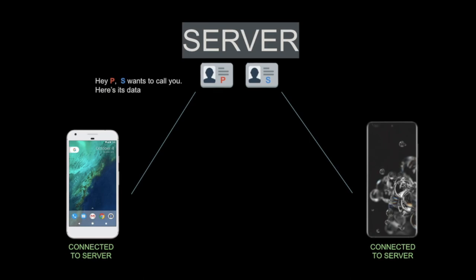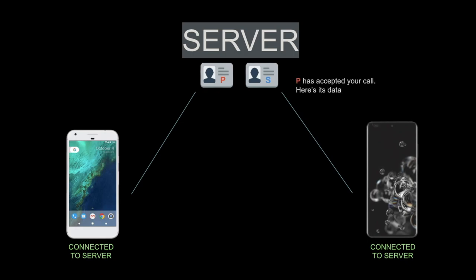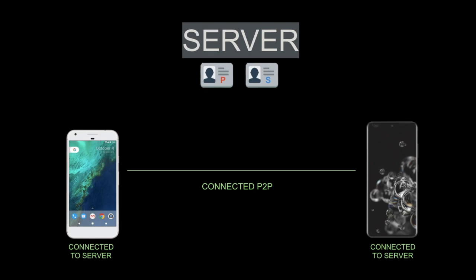The Pixel device will store the data given by S and then say: 'Okay, I accept S's call, and this is my network data and media configuration.' The server will go back to S and say: 'P has accepted your call. Here is its data.' S will then know about the network and media data of P. Now that both devices know each other's network data, they will get connected peer to peer and can send their video streams directly to each other and play each other's streams. Hope you understand the process — it will become clearer as we write the code. So let's start coding now.